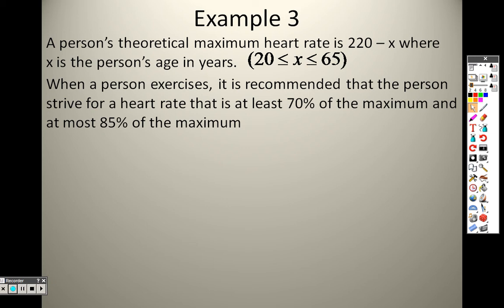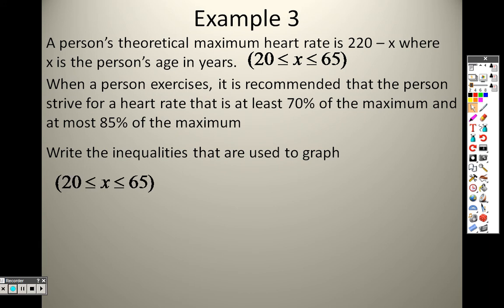Your range is between 70% to 85% of your maximum heart rate. We will write this as an inequality. That is my range for the person's age. This means I could also rewrite this as two different equations. I could separate this as x is greater than or equal to 20, and I could separate it as x is less than or equal to 65.